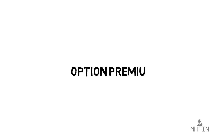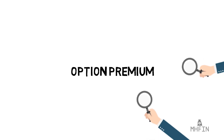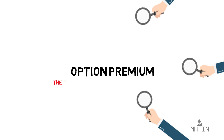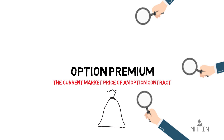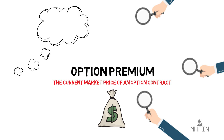Option premium — it's a term that's constantly thrown around, and for option newbies, it can be a major headache trying to comprehend it. In its most simple definition, an option premium is nothing more than the current market price of an option contract. By this definition, the premium is the income received by the seller, aka the writer of an options contract, to another party. But like all things options, things get more and more complicated as you dig further and further. Let's start with some basics.